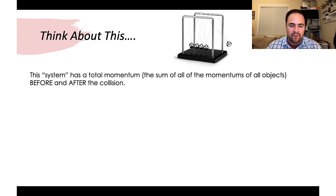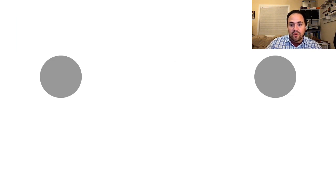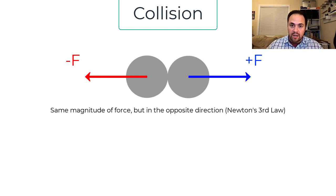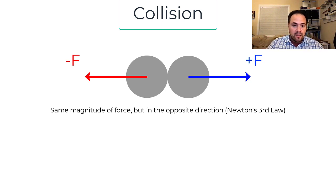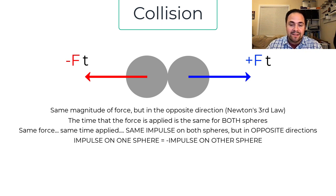This system has a total momentum — the sum of all individual momentums of the objects. It has a total before the collision and a total after. When the spheres collide, Newton's third law tells us they exert equal forces on each other in opposite directions, and this happens for the same amount of time on both objects. So both objects experience the same impulse, though in opposite directions.